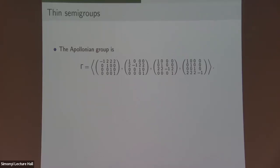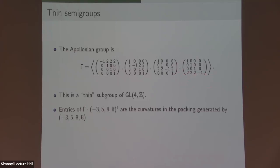The Apollonian group is a subgroup of GL(4) generated by four matrices. When you swap a circle, you compute 2A + 2B + 2C − D, which you can think of as one of these matrices — you keep the first three the same and swap out D. The entries of an orbit of this group are just the curvatures in the packing. So really, the question about which curvatures appear is just the question: here's a thin group, what are the values of the orbits? There's no geometry at all in this setup — it's just: here's a matrix group, what are the orbits? Then the question is whether we can generalize these reciprocity obstructions to other thin group settings.